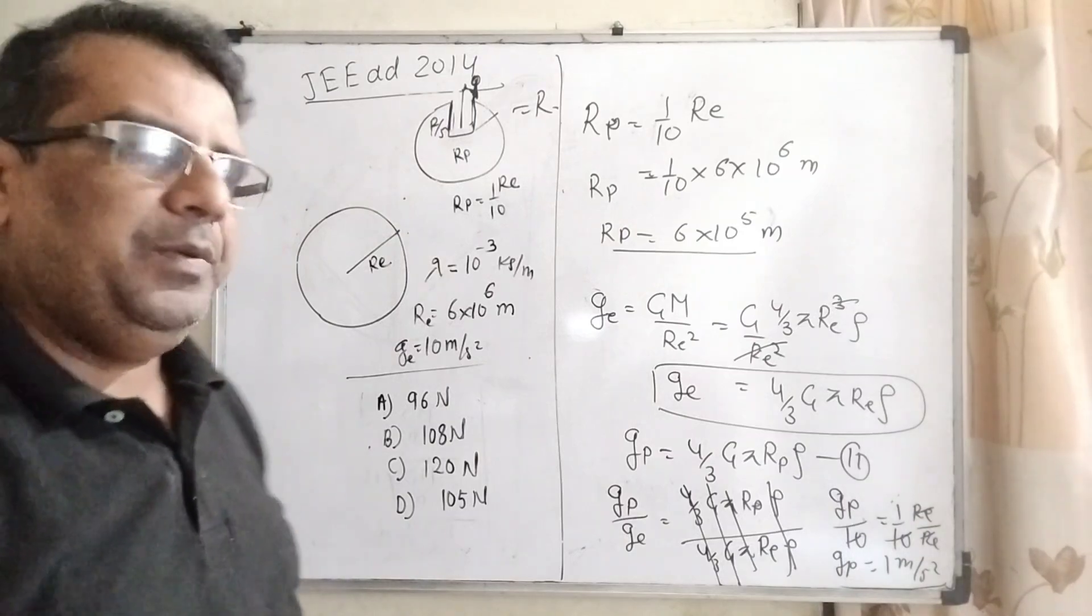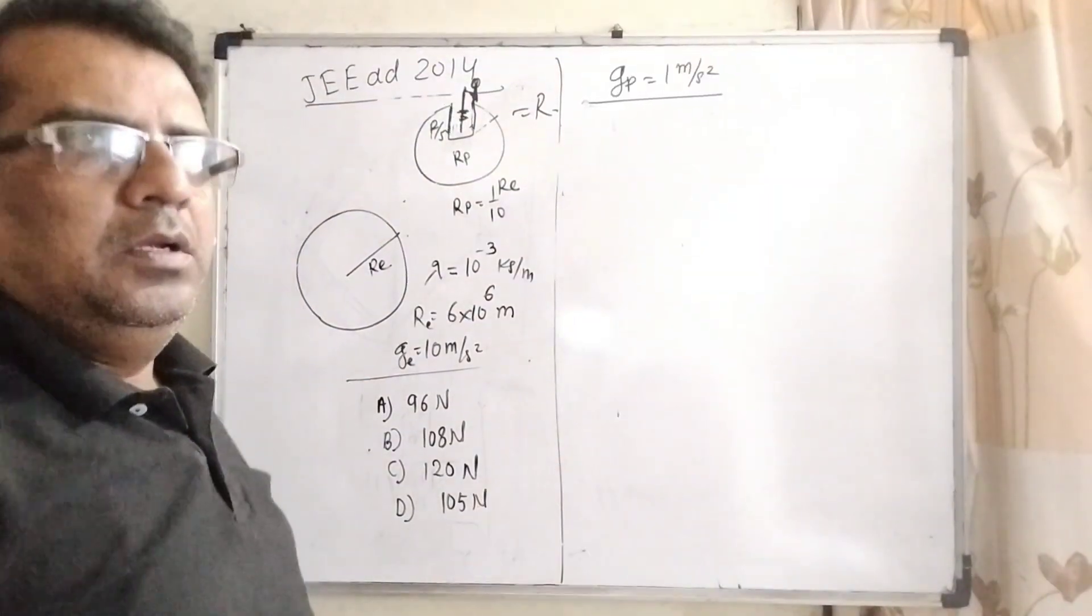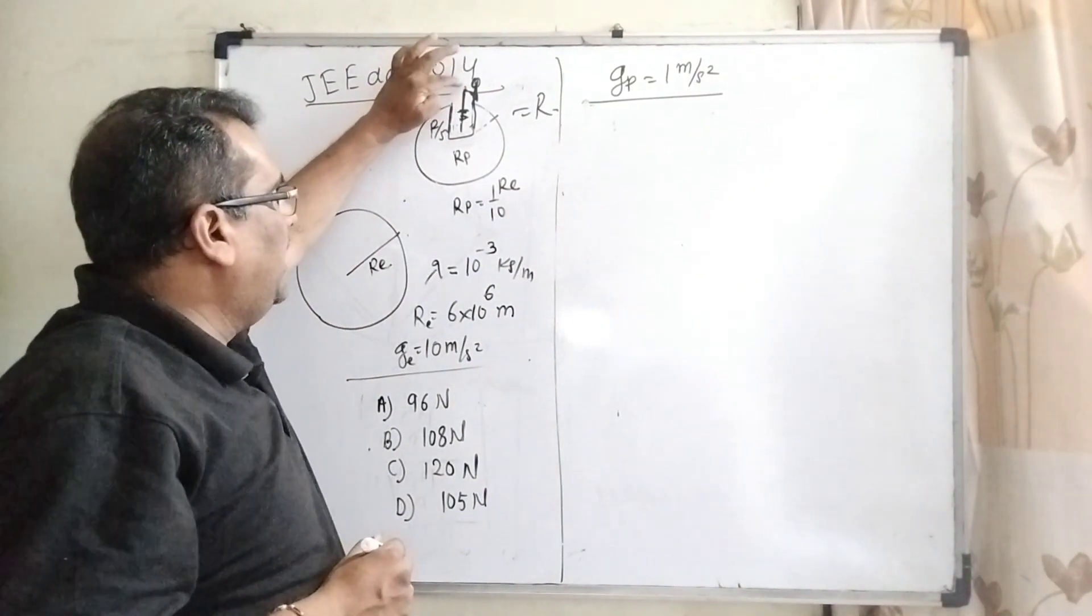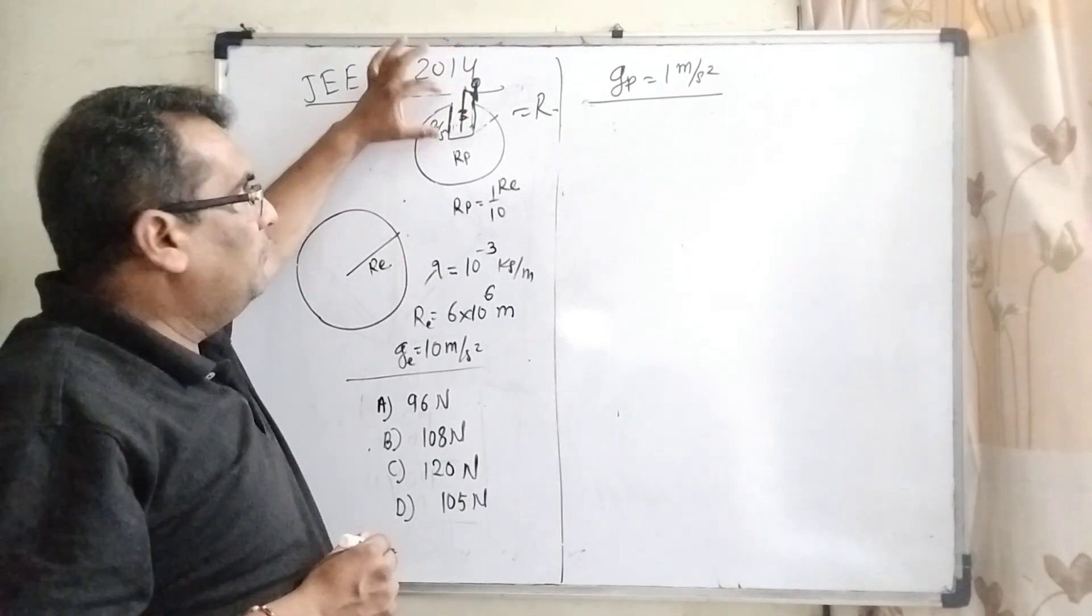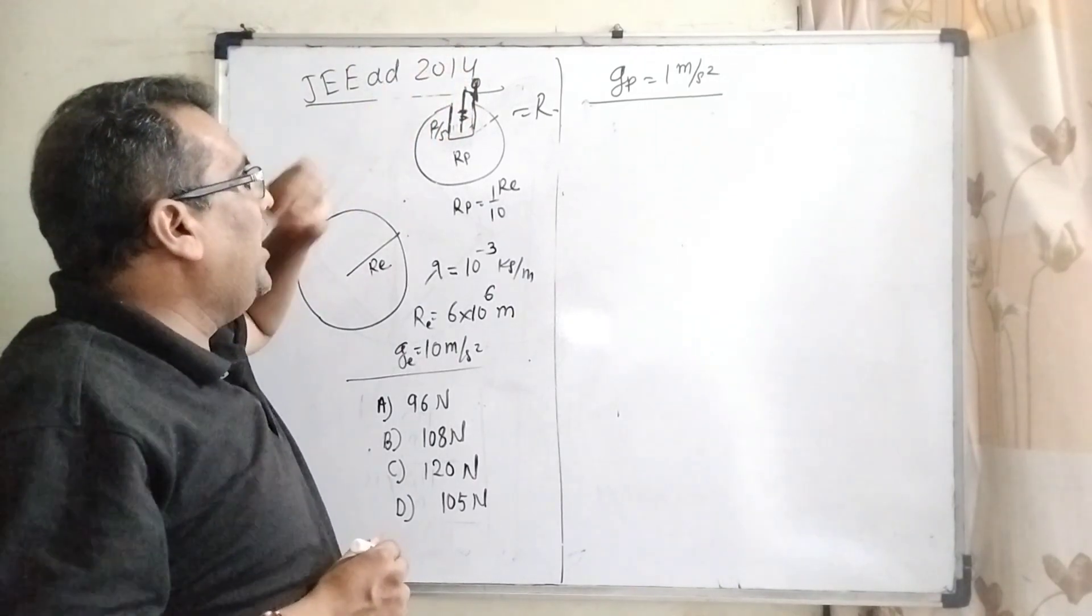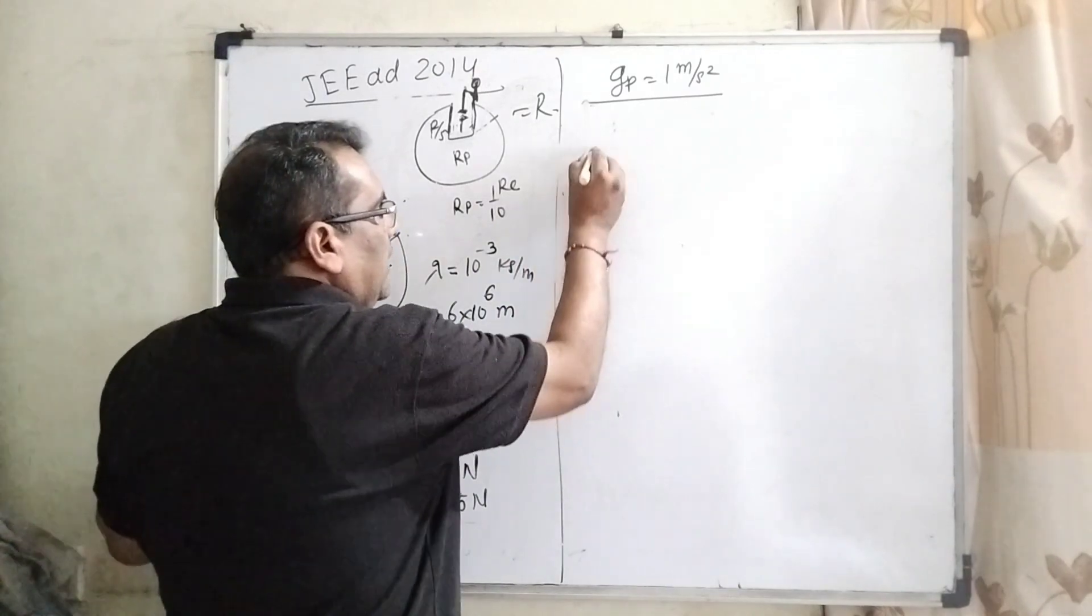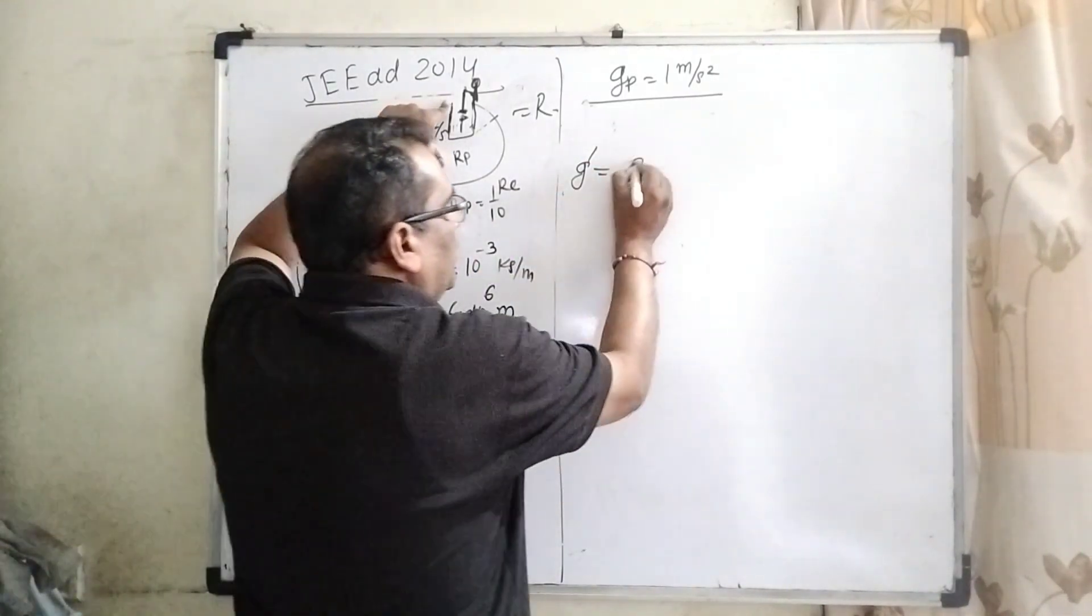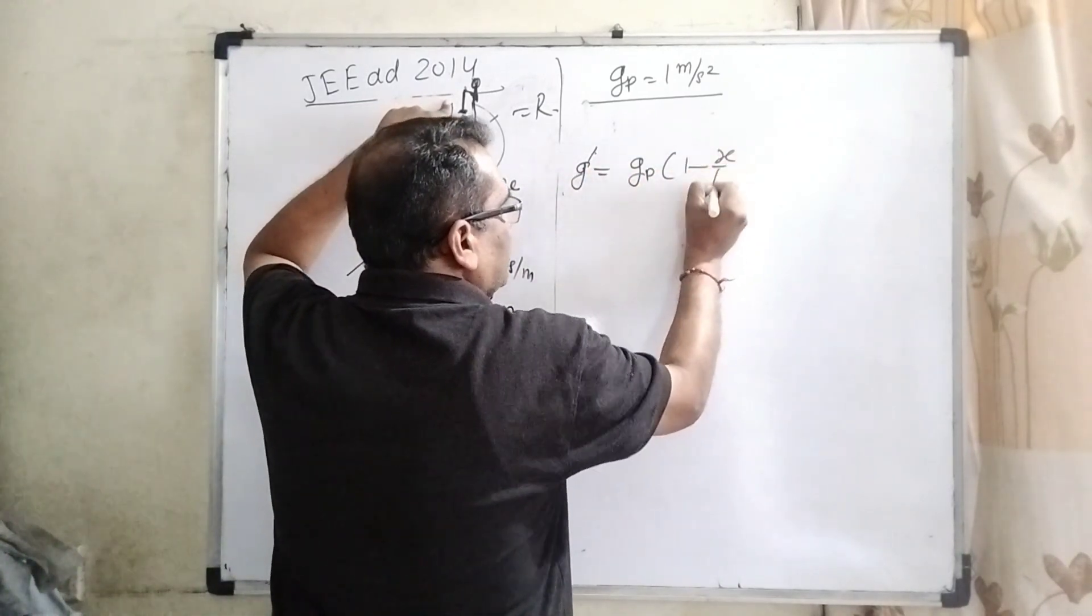Okay. Now, you have found out gP equal to 1 meter per second square. Now, we have to find out when a man digs a well and a wire is holding without touching, then at R by 5, what force does he experience? Then, we have to find out first what is acceleration due to gravity at the planet at the depth. You know that g dash equal to gP, 1 minus x by R.